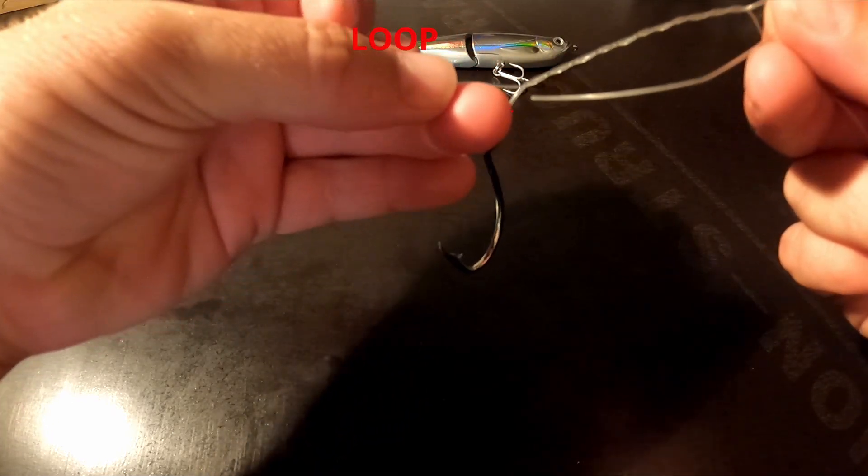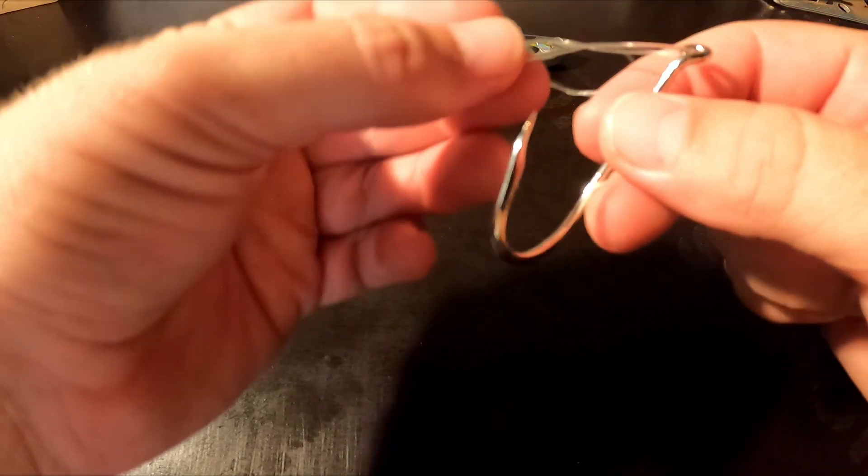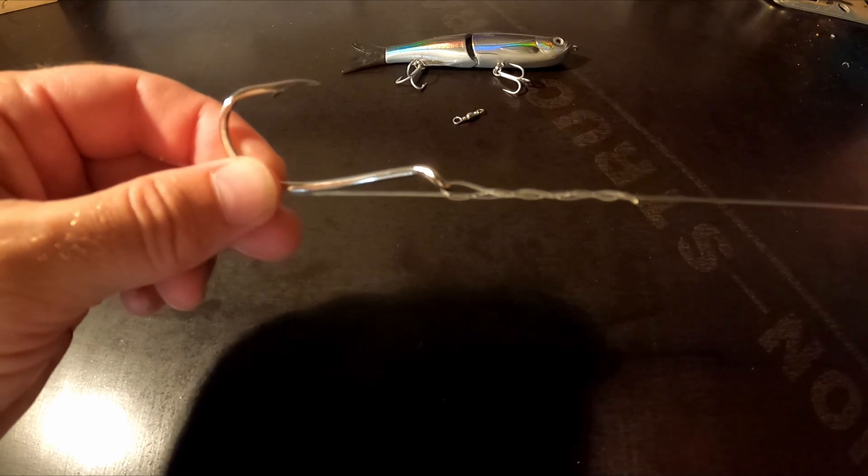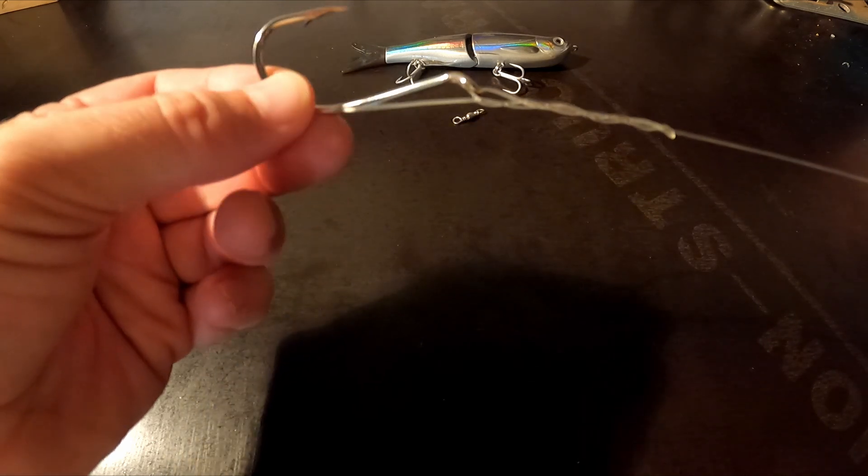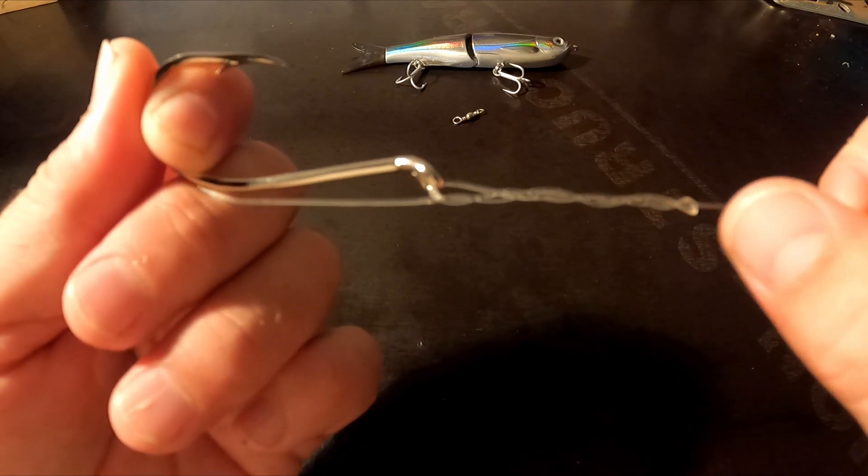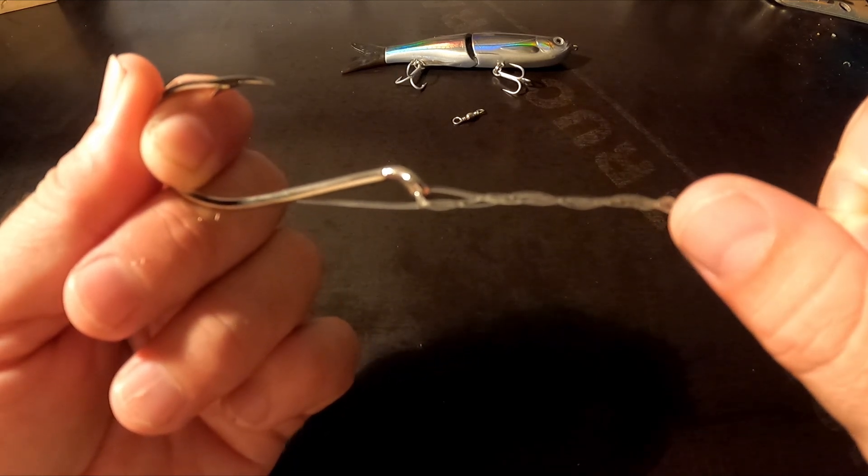Your tagline will go through that loop where my finger is, like that. And then you just want to tie it. Pull on the main line while you hold your tagline, and never tighten the knot unless you've lubricated it with a bit of saliva or water to stop any friction which may weaken your knot.